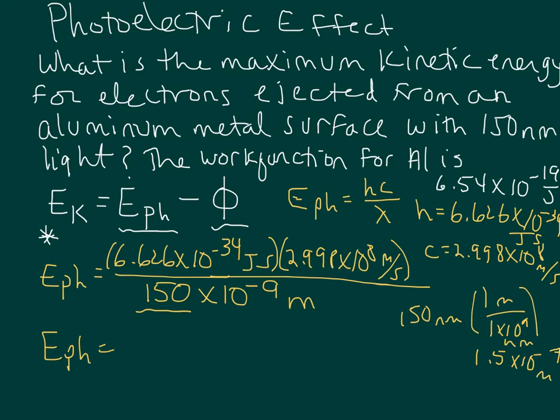So as we put that in the calculator: 6.626 times 10 to the negative 34, times 2.998 times 10 to the eighth — that gives me 1.986 times 10 to the negative 25. I'm going to divide that by 150 times 10 to the negative 9, and I end up with 1.32 times 10 to the negative 18 joules.